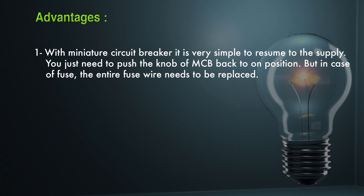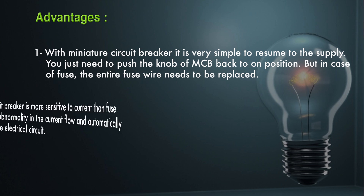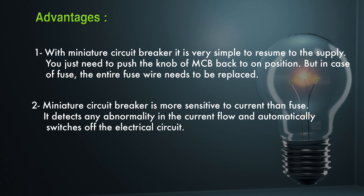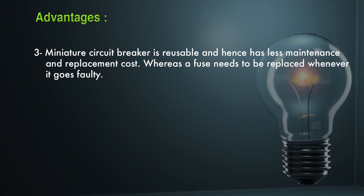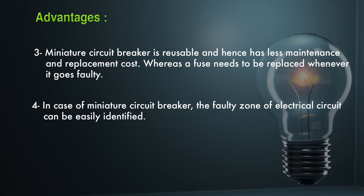The advantages of MCB over fuse are: it is very simple to resume supply — just push the knob back to on position, whereas with a fuse the entire fuse wire must be replaced; MCB is more sensitive to current than a fuse and automatically switches off upon detecting any abnormality; MCB is reusable and has lower maintenance and replacement cost; and faulty zones of the electric circuit can be easily identified with an MCB.